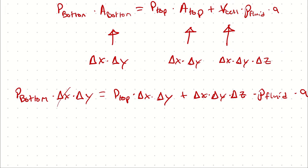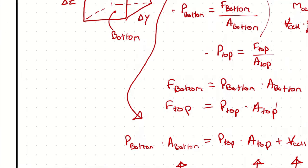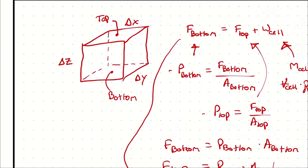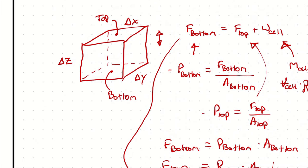Delta X cancels, Delta Y cancels, which means the size of the cell only matters vertically. The width or front-to-back dimension doesn't matter at all. It could be one square meter, a hundred square meters, or half a square meter—when discussing these properties, only the height matters.